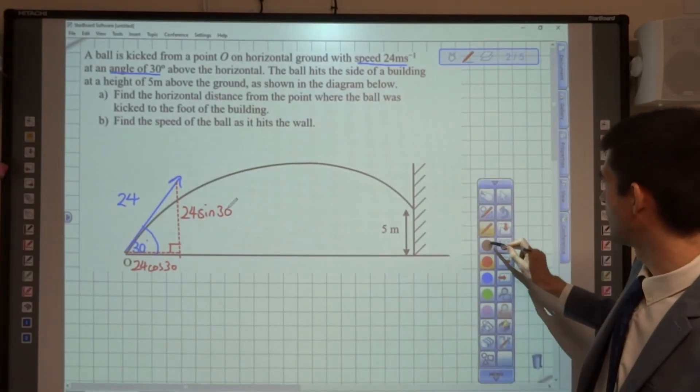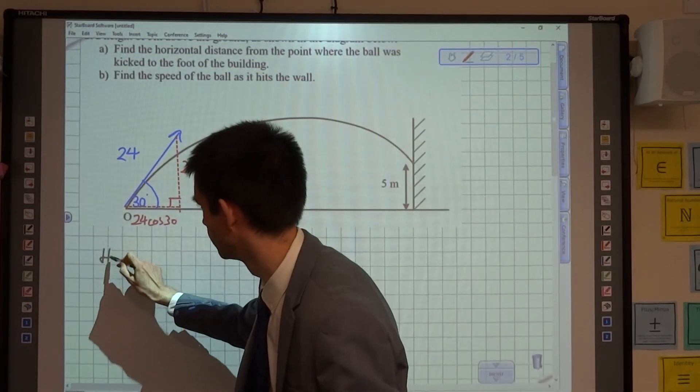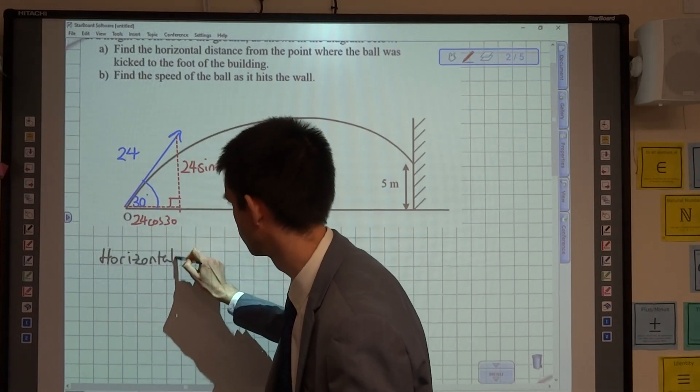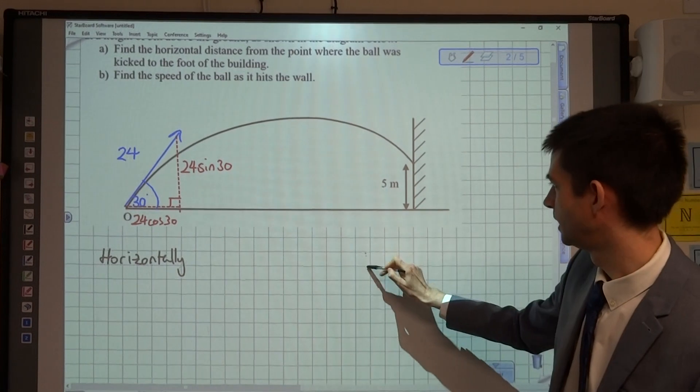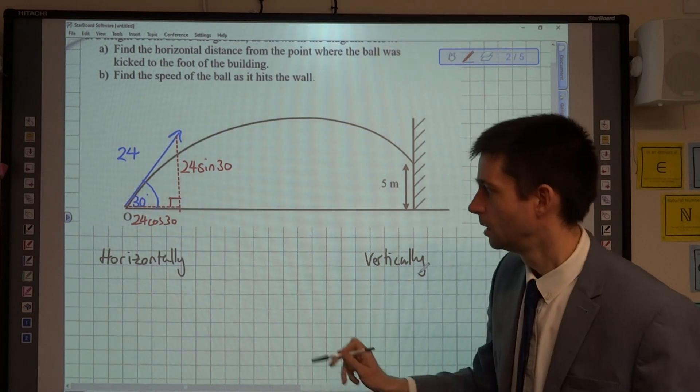Let's have a think about what's going on then. Remember what I said about splitting your page into horizontal and vertical? So, we'll do horizontally on the left-hand side and vertically on the right-hand side, and we'll start by just writing down everything that we know.